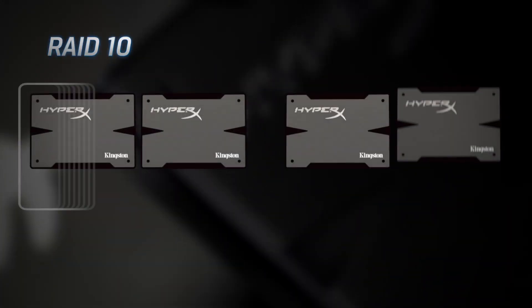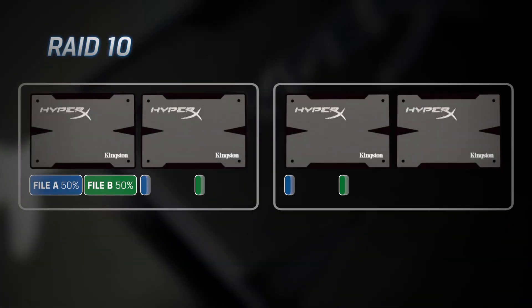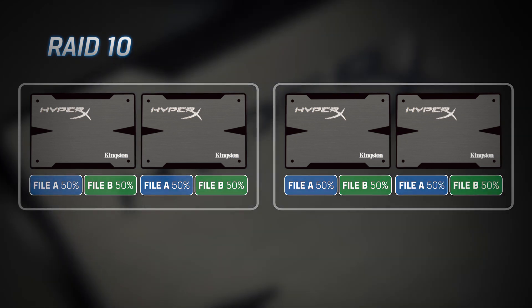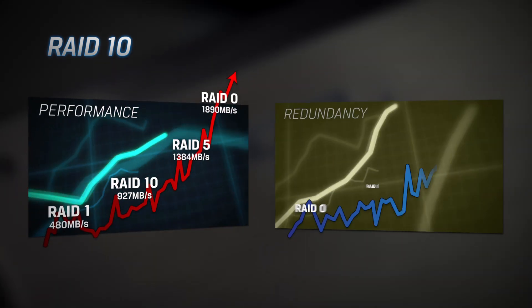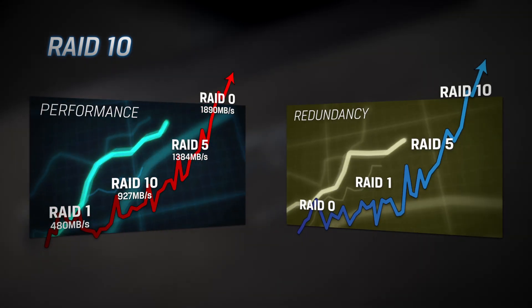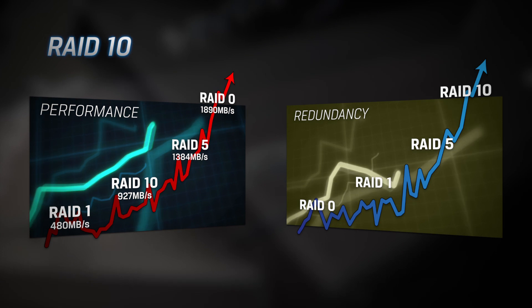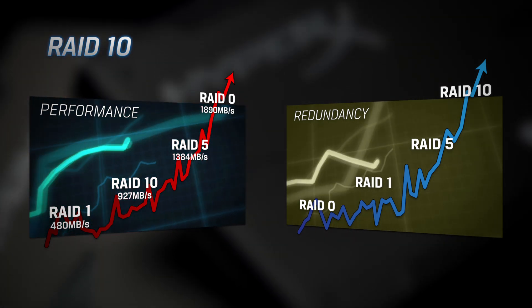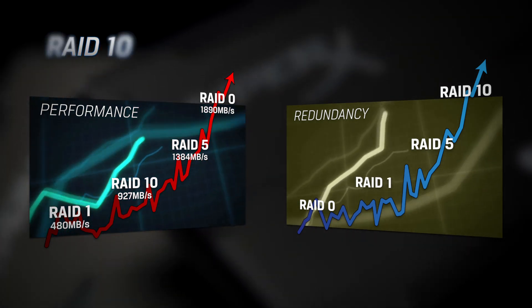RAID 10 is a combination of RAID 0 and 1, offering fast write performance and redundancy. However, you sacrifice half the capacity of the drives you have built into your RAID 10 array, which can be more expensive to implement for larger data sets.